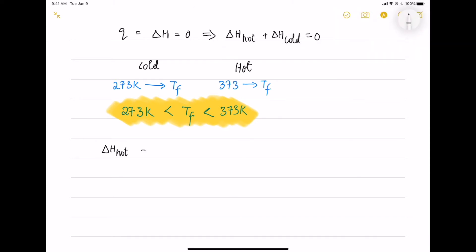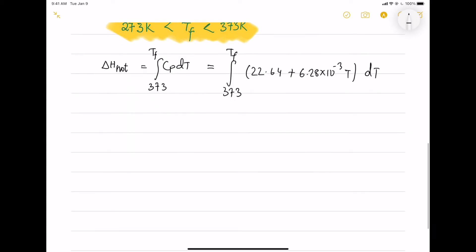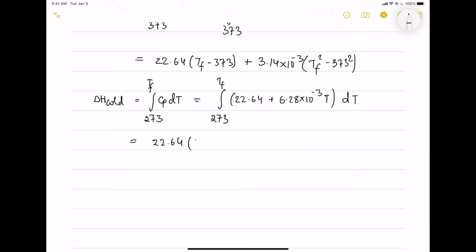We will do the integration of hot. We will integrate the CP and this is how the final equation looks like after inputting the definite intervals and this is delta H cold. And after integrating, we are left with this sort of equation.